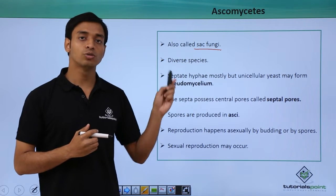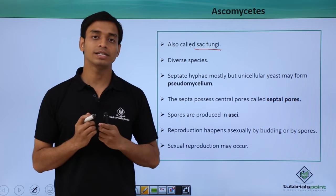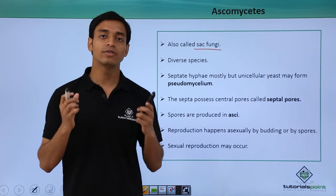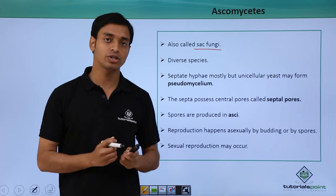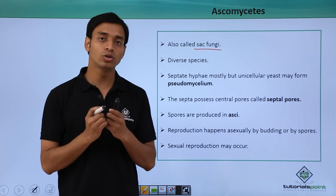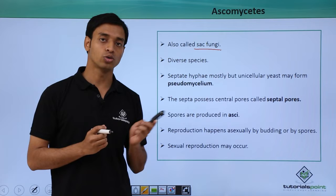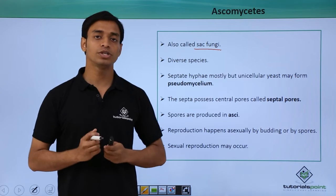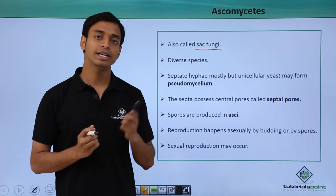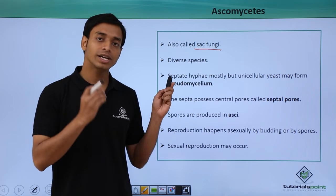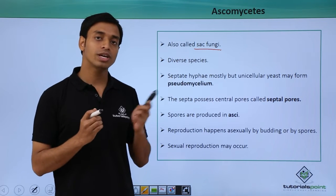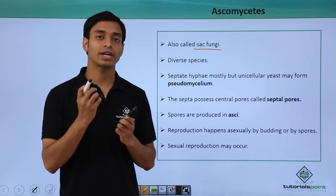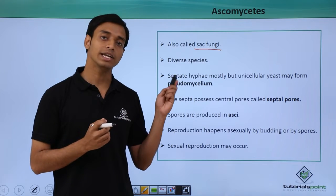This group of ascomycetes has a very diverse group of species included in it — about 30,000 species are included in this group, making it a very diverse group of organisms.